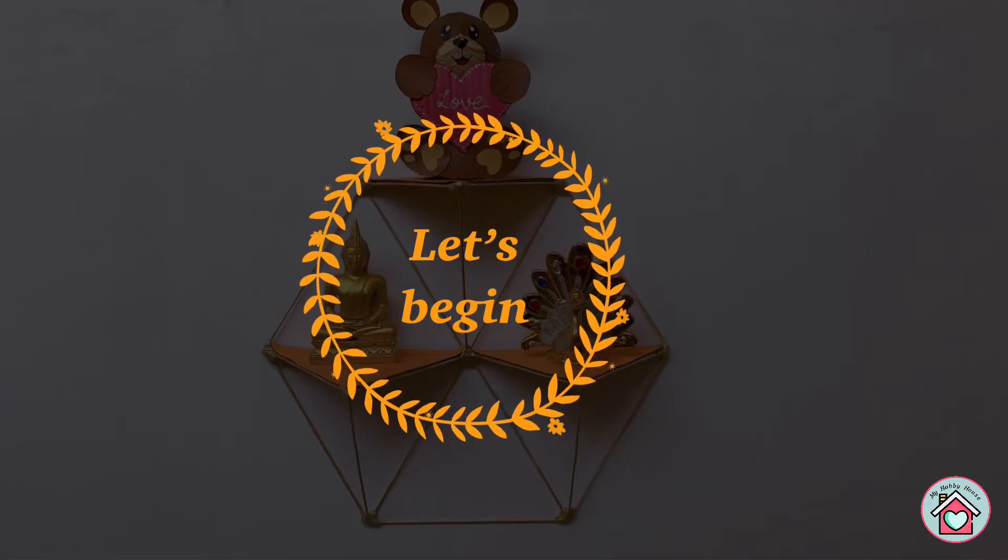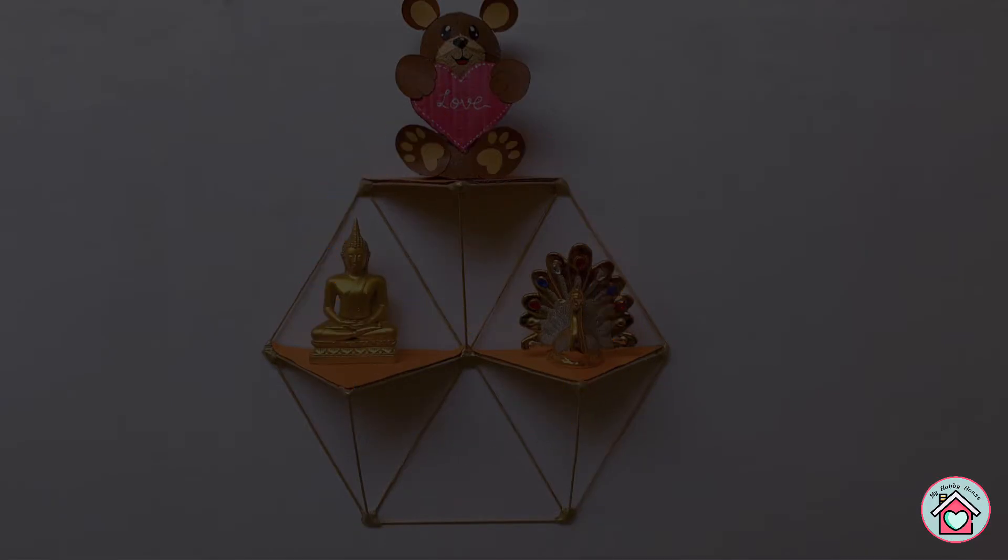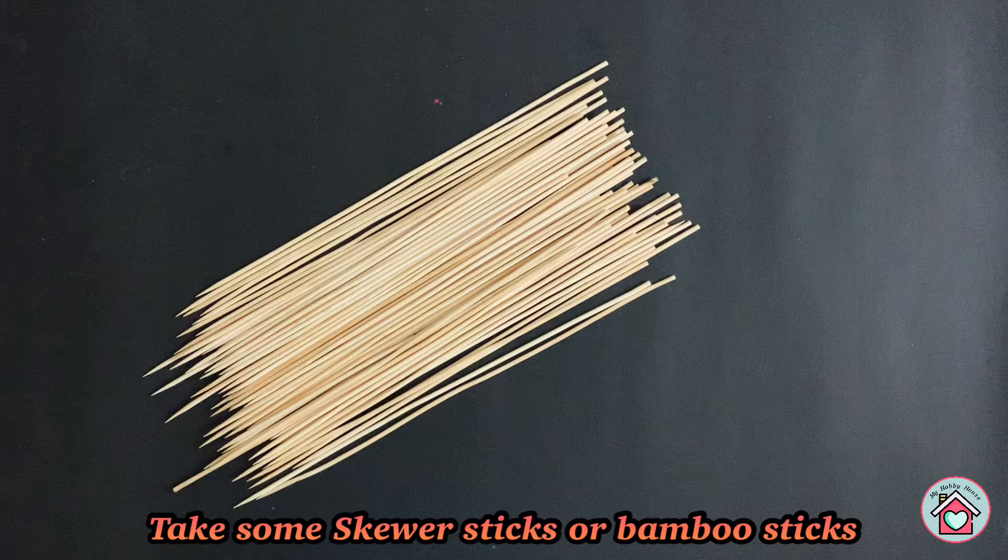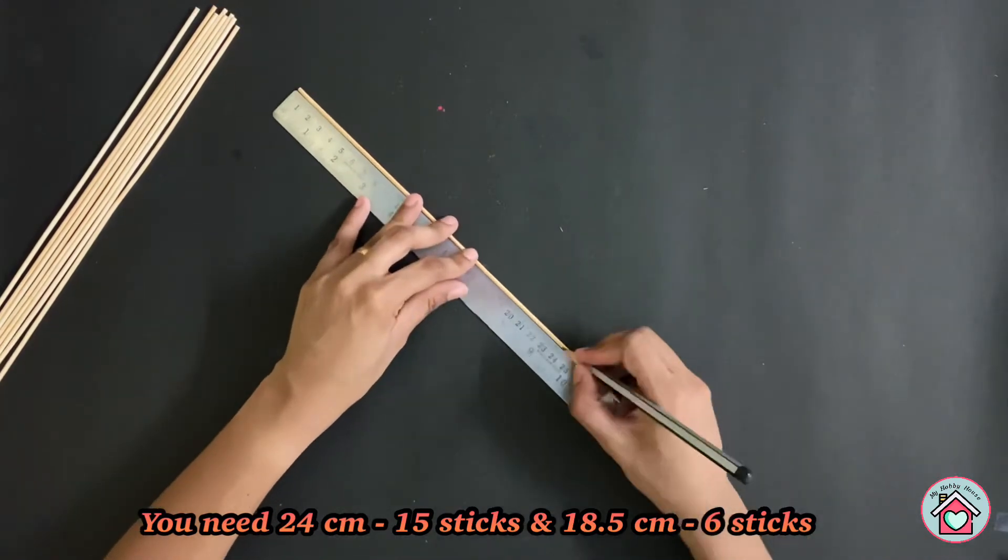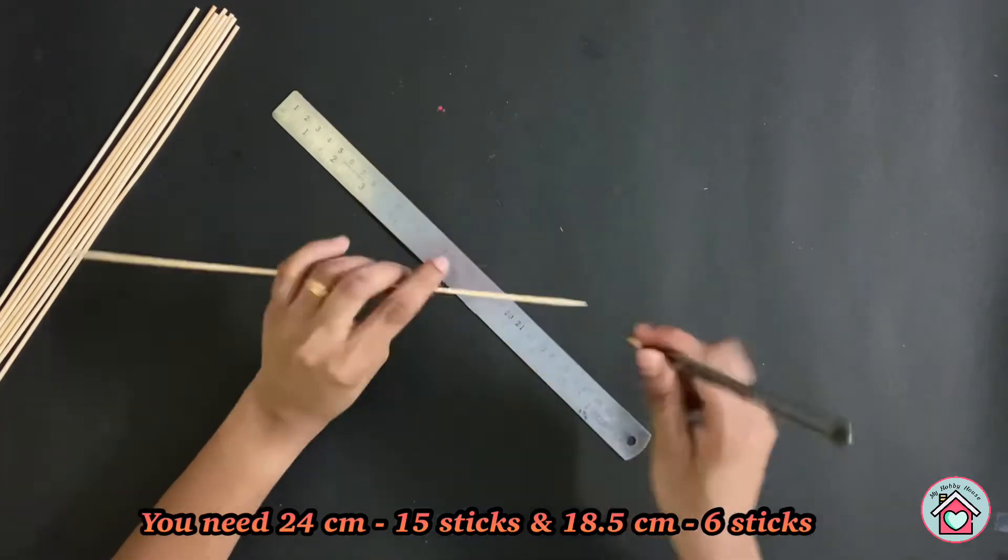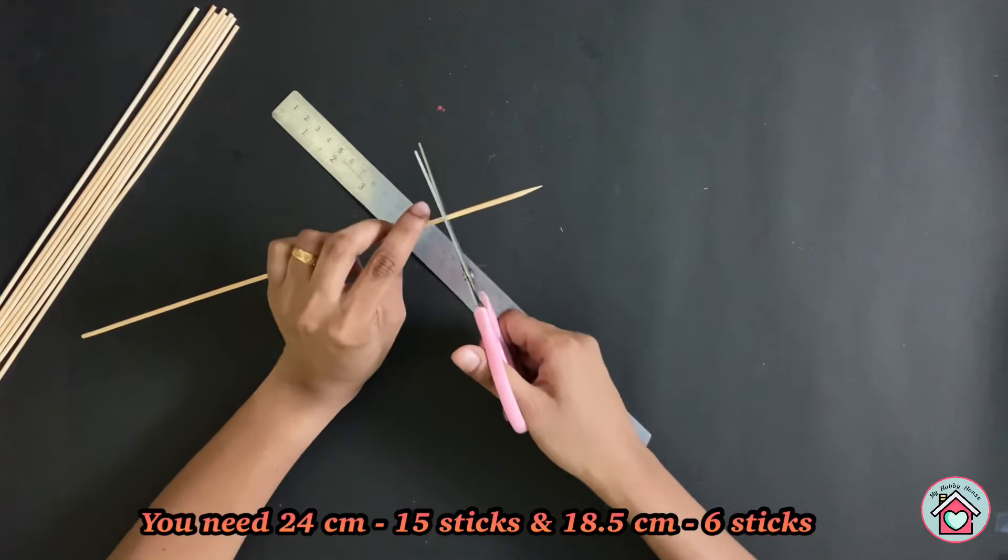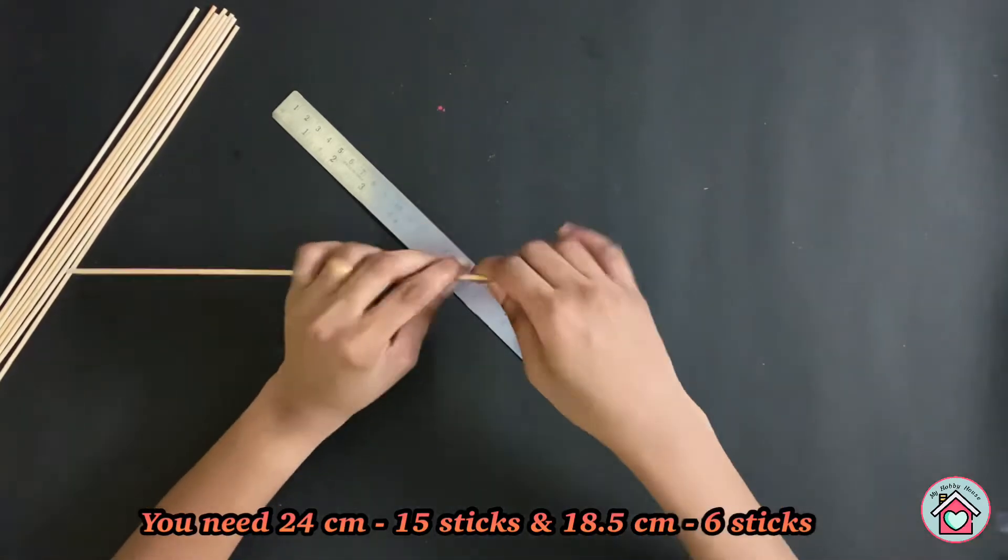So let's get started. For this take some skewer sticks or bamboo sticks. Measure and cut the sticks. You need 15 sticks in 24 centimeter and 6 sticks in 18.5 centimeter.